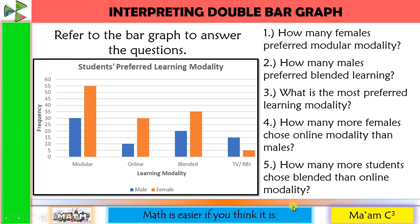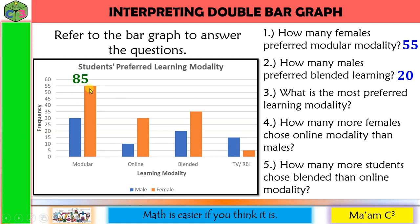Now, let us answer these questions. Number one, how many females preferred modular modality? Female is color orange, and for modular there are 55 females. Number two, how many males preferred blended learning? Male is color blue, and for blended that is 20. Number three, what is the most preferred learning modality? We have to add the votes of male and female. For modular: 30 males plus 55 females equals 85. For online: 10 males plus 30 females equals 40.